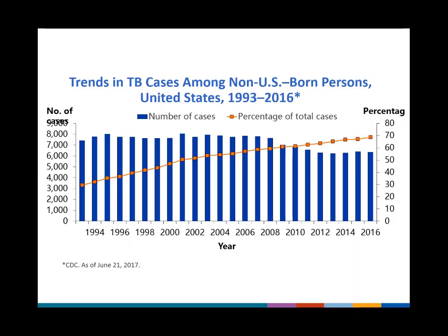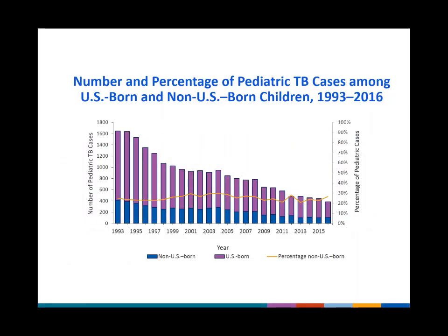In contrast to overall U.S. TB cases, where nearly 70 percent occur among non-U.S.-born persons, only about one-quarter of the pediatric cases are among non-U.S.-born children. That fraction has been fairly stable between 21 to 30 percent since 1993. This is because many of these young children with TB were actually born in the United States, but their families are immigrants.